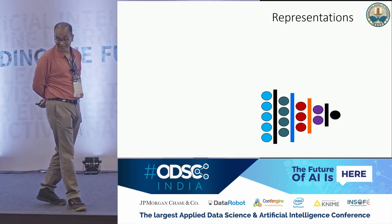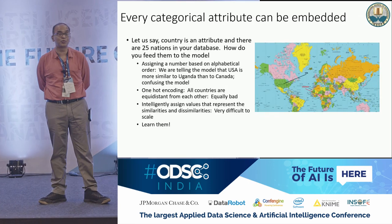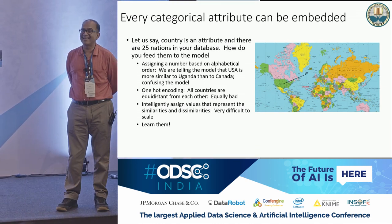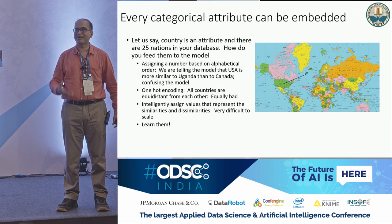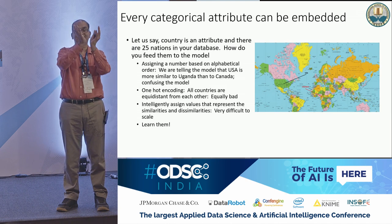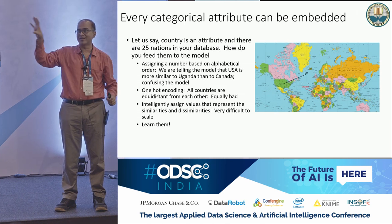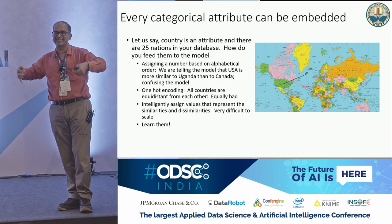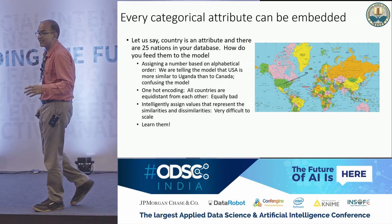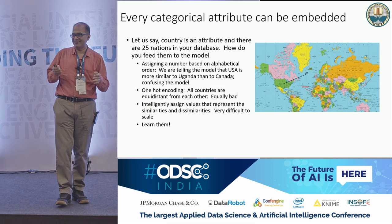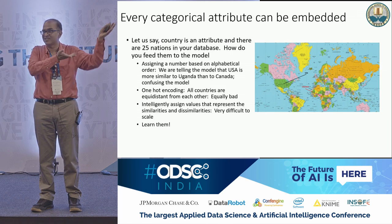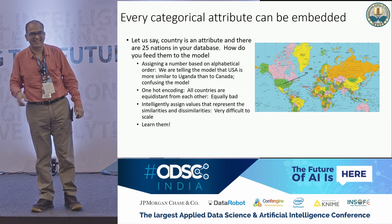Coming to categorical attributes, we represent them very differently now, thanks to Google's 2013 word2vec. Word2vec work actually started in the 1980s with singular value decompositions — people showed that similar words are clustered in one location, but published it in a very academic way. Google came along and said the same thing differently: king minus man plus woman equals queen. The world got excited. But actually, king minus man plus woman equals queen just means king is to man as queen is to woman — which is what others had been saying for 30 years.